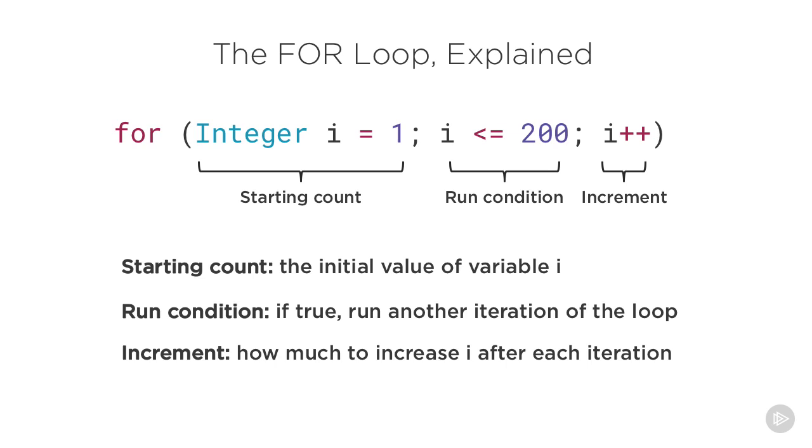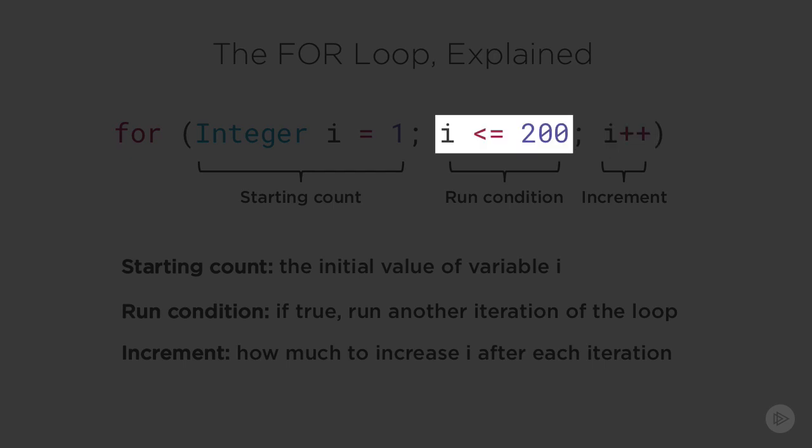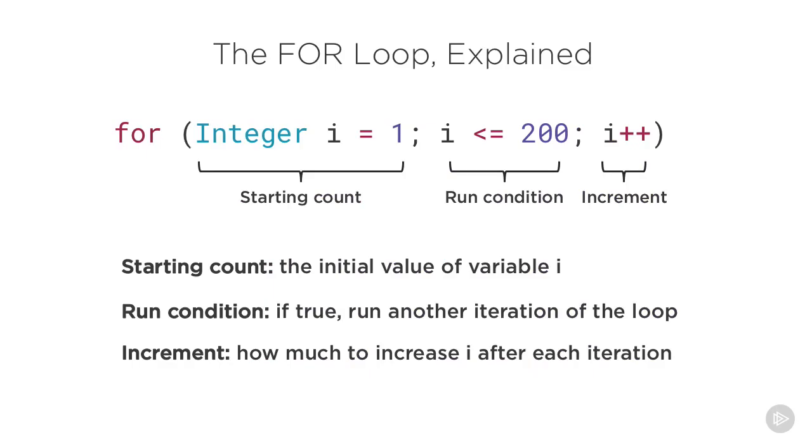So to summarize this entire for loop in one sentence, it basically says: start our loop by setting i equal to 1, add 1 to i after each iteration, and keep looping as long as i is less than or equal to 200. Thus, our loop will run exactly 200 times.